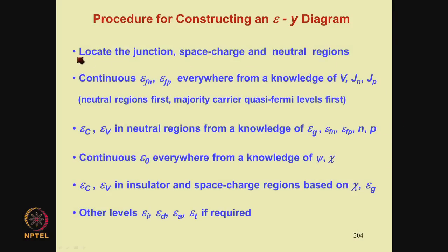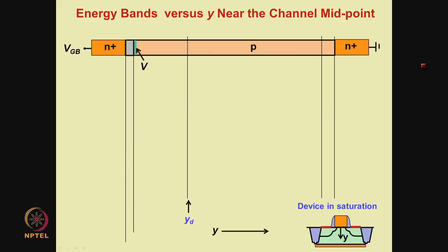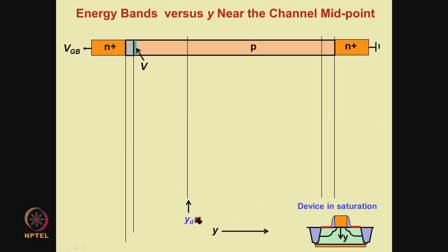These are the steps. The first step is to locate the junctions, space charge and neutral regions. Junctions in this device are the N+ gate–silicon dioxide insulator junction, the silicon dioxide–substrate junction, and the substrate–substrate electrode junction. There are two space charge regions: one controlled by the gate and one due to the substrate–substrate electrode junction. Yd represents the edge of the depletion layer due to the space charge layer controlled by the gate.